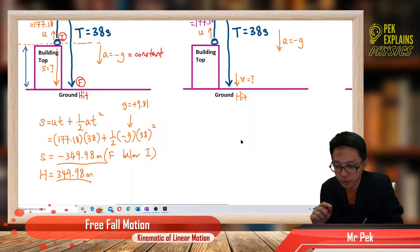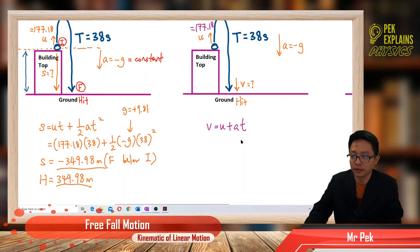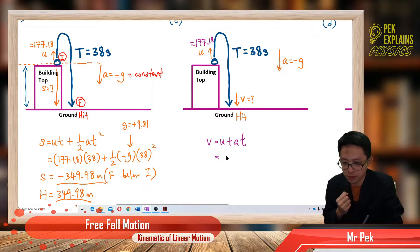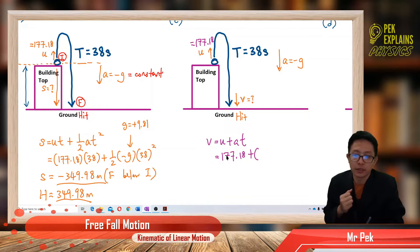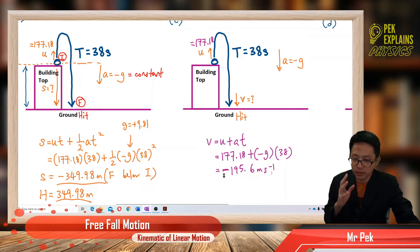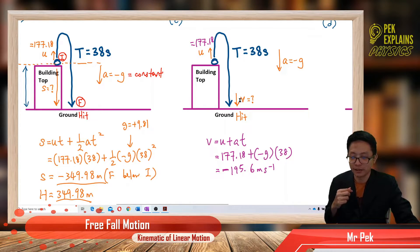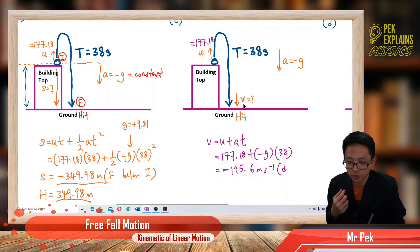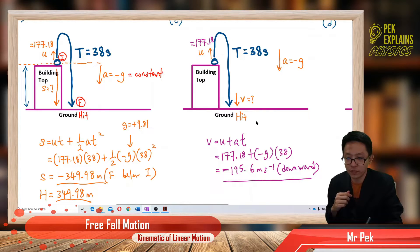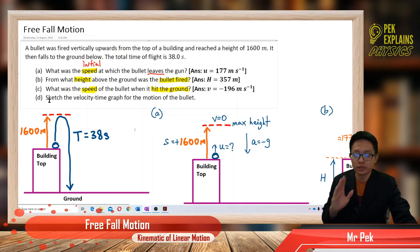Using v = u + at: the initial speed is 177.18, a is negative g, and the time taken is 38 seconds. The final velocity is negative 195.6 meters per second. It is negative because the direction of velocity is going downward when it hits the ground — so the final velocity is directed downward.